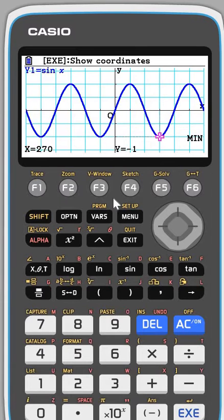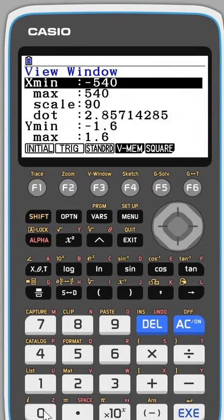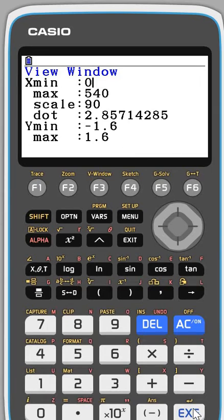You could adjust the view window so that you are only looking at the section you need for your question. So, for example, if it asked you to sketch it from 0 up to 360 degrees, just change the x values. So, the x minimum is 0, and the x maximum is 360.